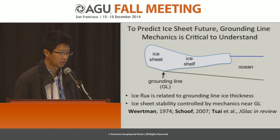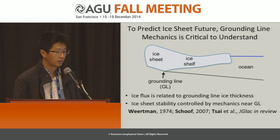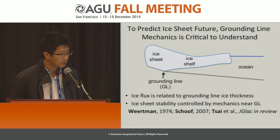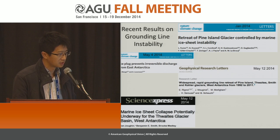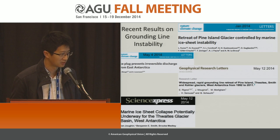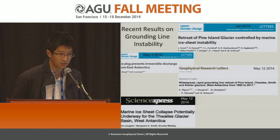More importantly, the ice sheet stability is controlled by mechanics at the grounding line. This is also evident in some recent work I've submitted to Journal of Glaciology, where we find that it's really this near grounding line zone where the frictional properties at the base are important. There have also been a bunch of recent papers about grounding line instability and how it relates to bed slopes near the grounding line.